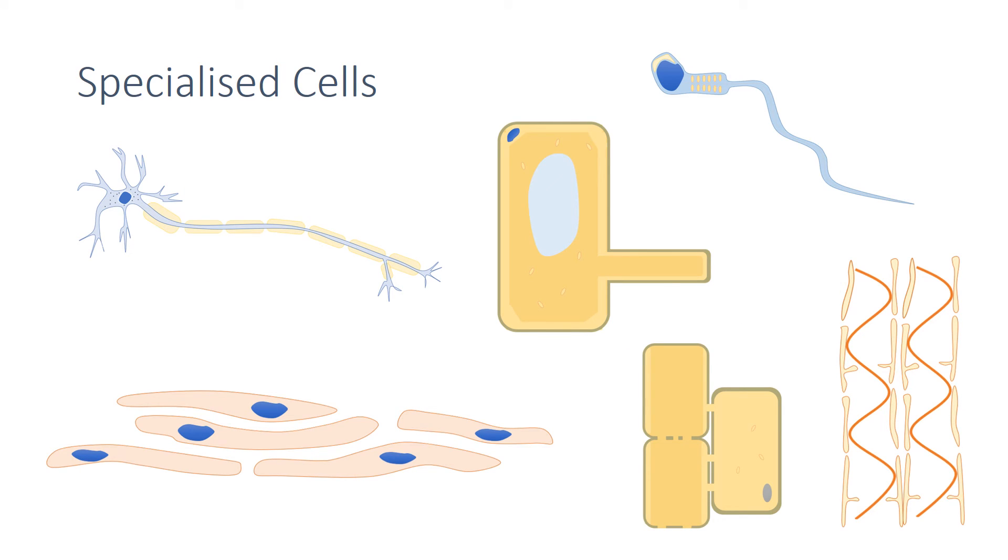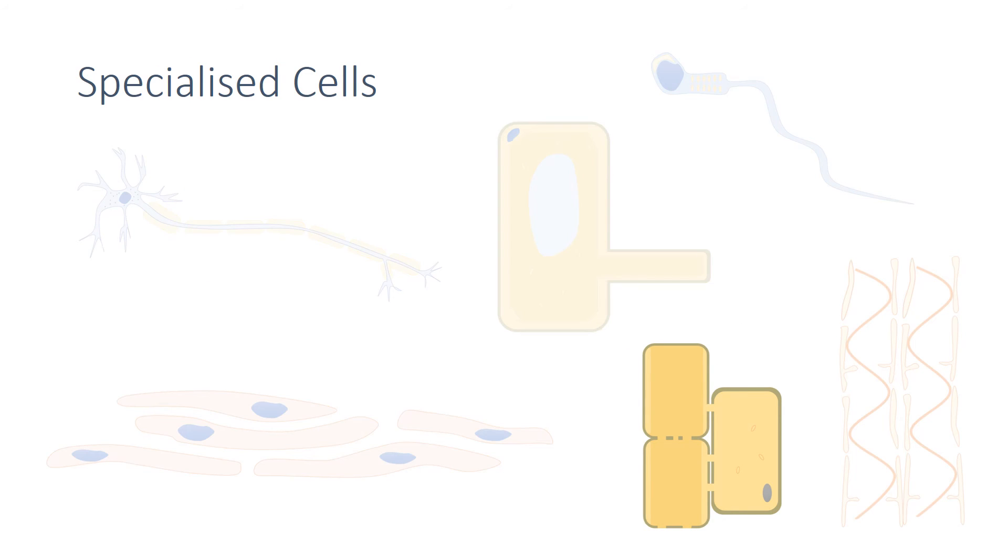You also need to know examples of plant cell adaptations such as the phloem cells. These cells are specialized to transport the sugars produced in photosynthesis around the plant.